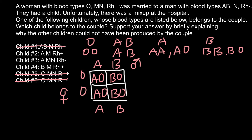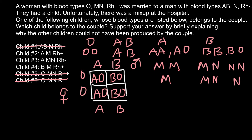In the MN system we have only two alleles, M and N. When a person has two M alleles, their blood group is M. When a person has one M and one N allele, phenotype is MN. When a person has two N alleles, phenotype is N. The female is MN and the male belongs to blood group N, which means he is homozygous for the N allele — so female is heterozygous MN and male is homozygous NN.